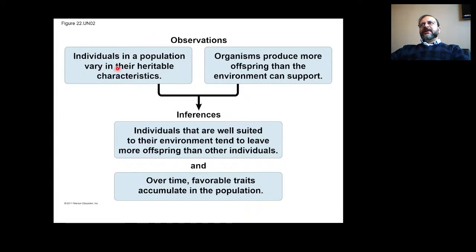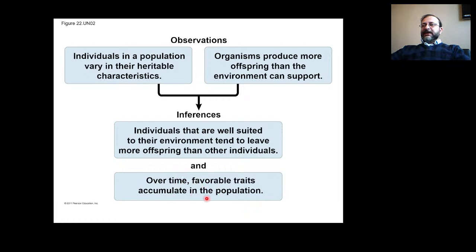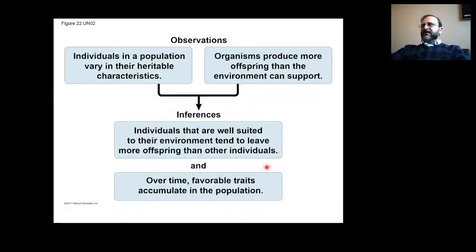In science, a theory accounts for many observations and attempts to explain and integrate a great variety of phenomena. Darwin's theory of evolution by natural selection integrates diverse areas of biological study. The key observations are: individuals in a population vary in heritable characteristics, and organisms produce more offspring than the environment can support. The inferences are: individuals well suited to their environment tend to leave more offspring, and over time favorable traits accumulate in the population. Please learn and inspect this table carefully.